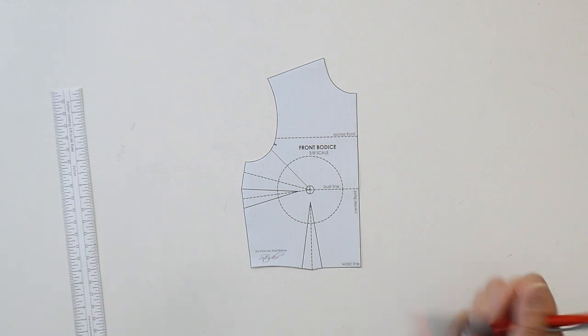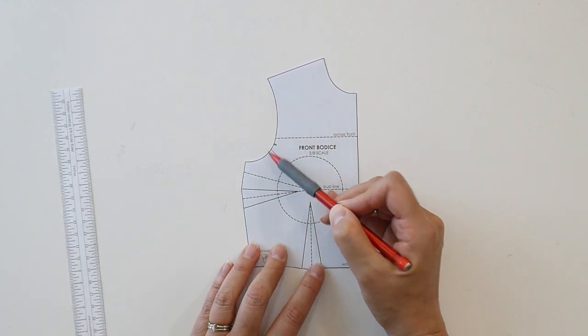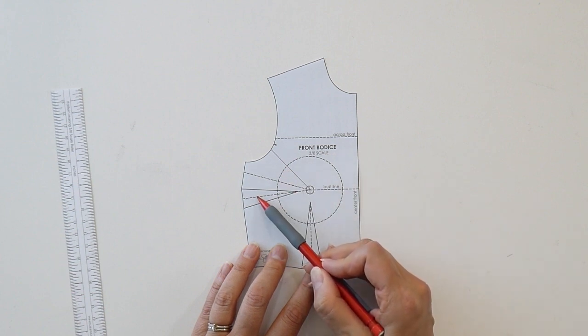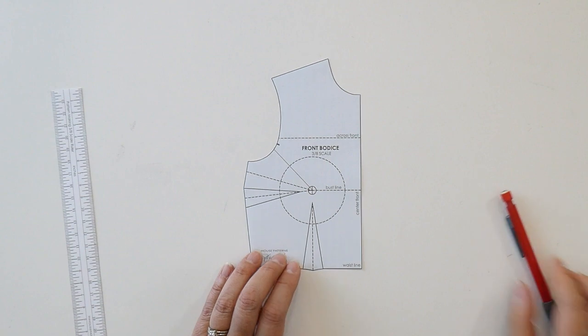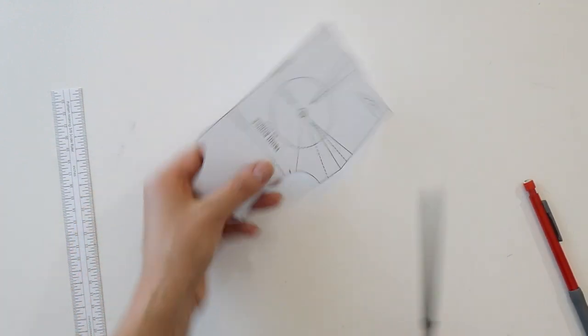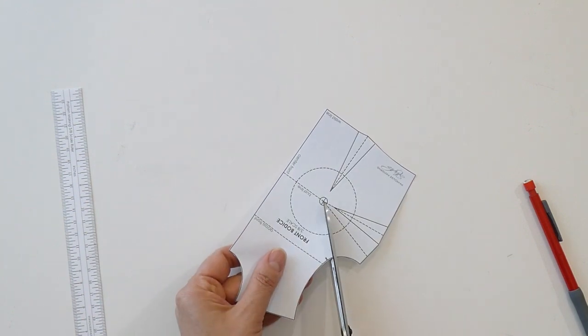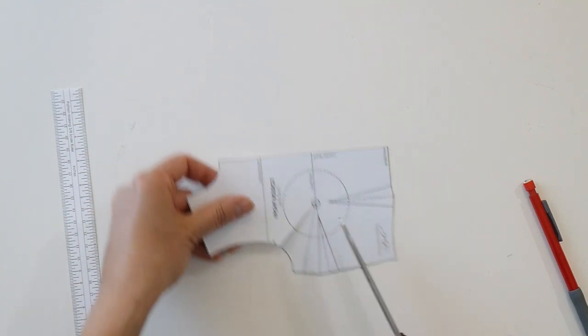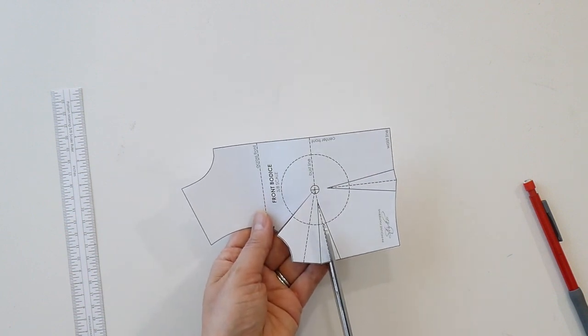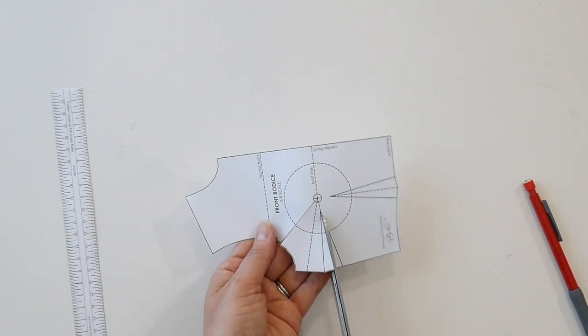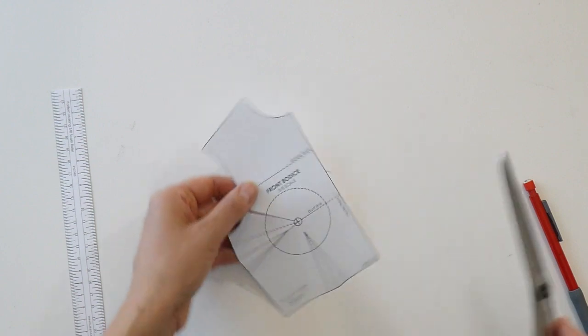Now when you have that, you're going to take that excess length that you're seeing in the front armhole and move it to your side bust dart or your bust dart, wherever it may be. So all you're going to do is cut your pattern to the bust point, and then the other slash line is going to go through the bust dart. I'm just going to choose the center line of the bust dart here, and you're going to leave a hinge there at the bust point.